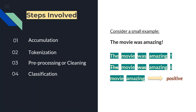The next step is classification, where we're just left with two words: 'movie' and 'amazing'. Our task is to classify this into positive or negative. You can see the sentiment of 'movie' is neutral, so the score would be zero, and the sentiment of 'amazing' is positive, so the score would be one. The total score would be zero plus one — that is one positive.